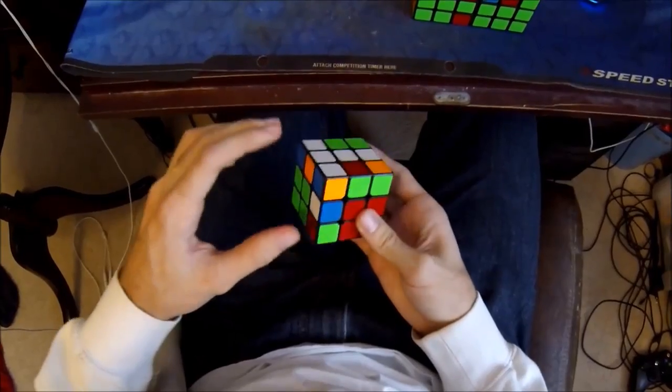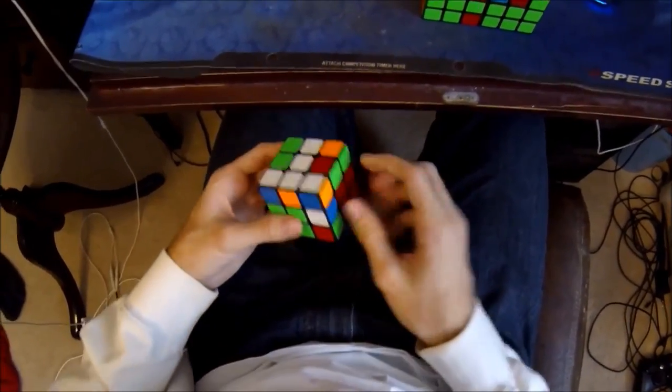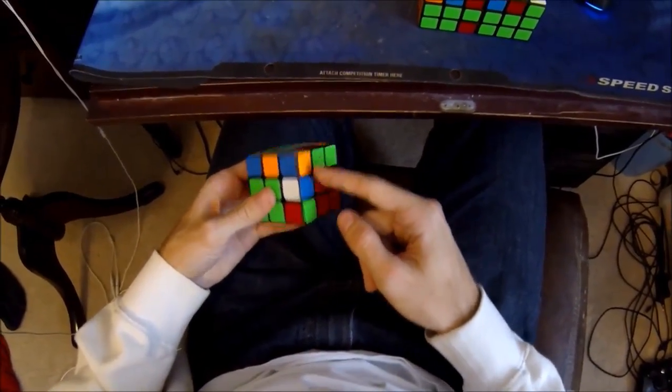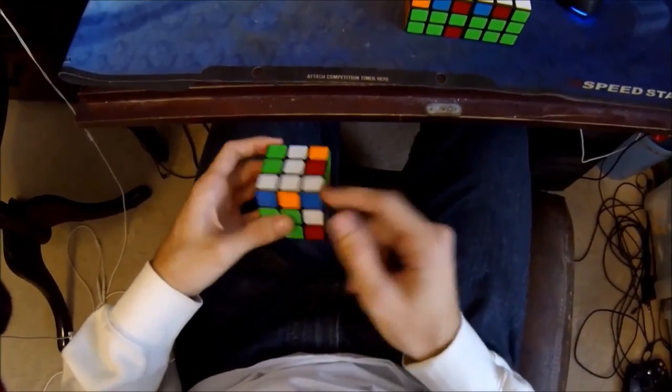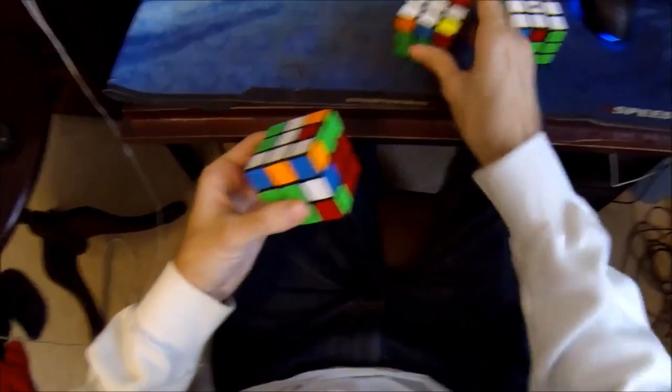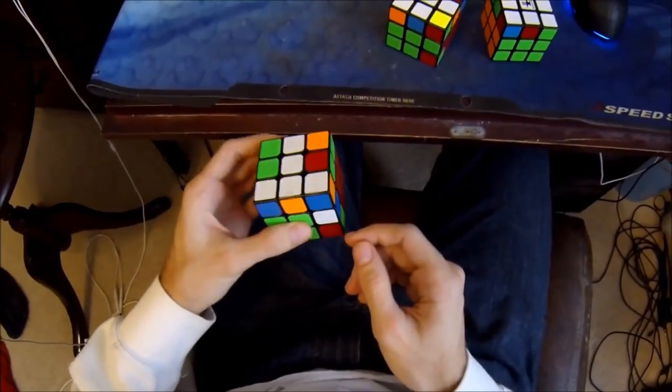So the first phase is called ELS. And what you do is you position the edge while orienting the remaining edges on the last layer. So you have a cross on the last layer. There are 21 cases to do this.